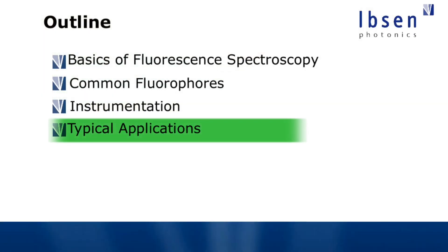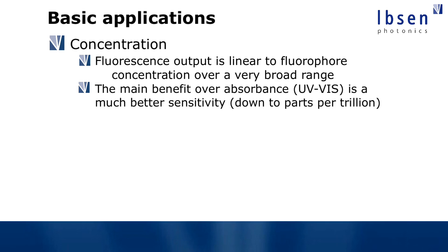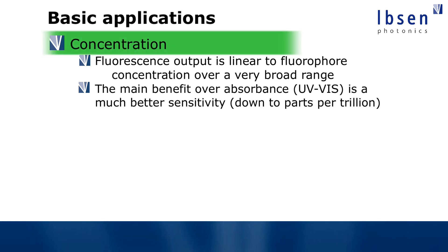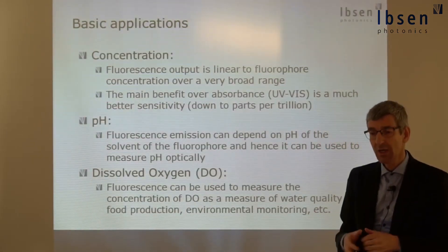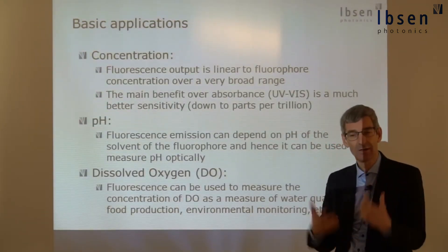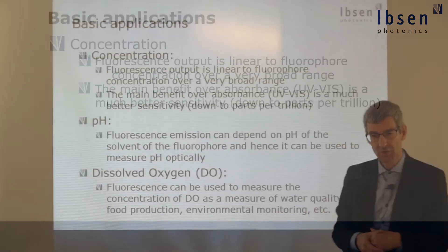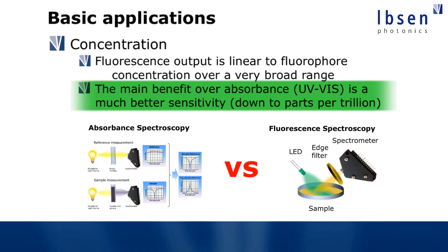Finally I will talk about some applications of fluorescent spectroscopy. Concentration is something you can measure with a fluorophore, because the fluorescent emission is basically linearly dependent on the concentration of your fluorophore. So you have a very simple relation between how much light is emitted and what is the presence of my material. The main benefit over UV-Vis or absorbance spectroscopy is that you can measure much much lower concentrations with fluorescence than you can with absorbance.